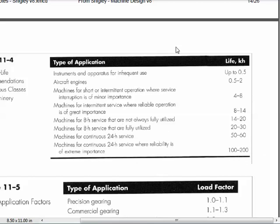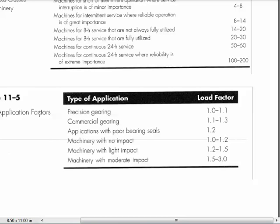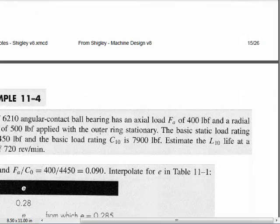Those are some suggestions for how many hours you might want to design a bearing to last. The application factor of 1.2 is not terribly special — that would be either no impact or light impact. Moderate impact might call for 1.5 to 3. This table gives suggestions: if we're carrying ultra-precision gears, we don't need much of a load factor; commercial gears need a bit more. These load factors raise the load we plan to apply mathematically to account for a bit more damage.